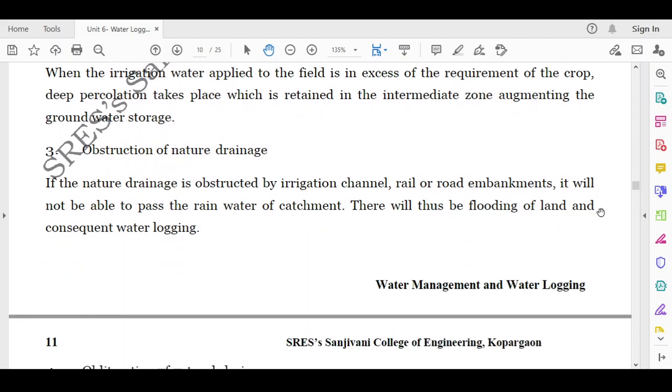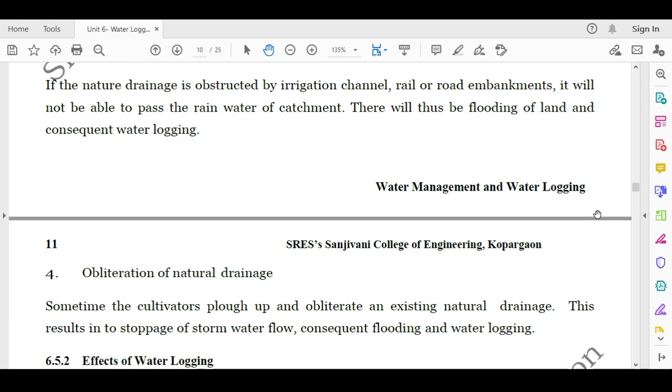Then obstruction of the natural drainage. If the natural drainage is obstructed by irrigation channel, rail, road embankments, it will not be able to pass the rainwater of the catchment. There will thus be flooding of land and consequent water logging. So any obstruction in the natural drainage will increase the water logging phenomena.